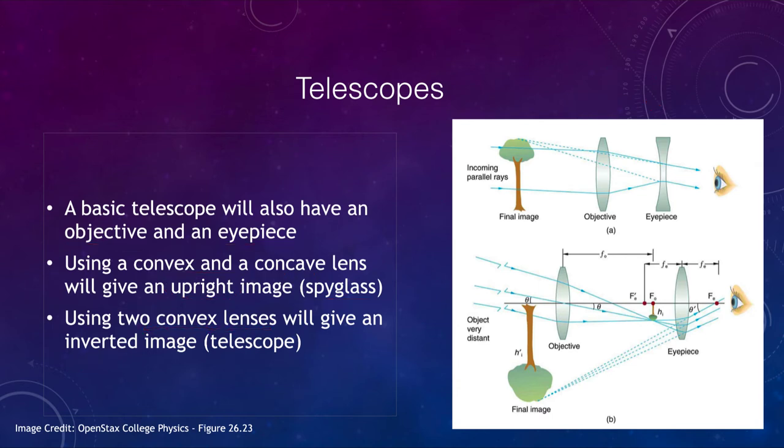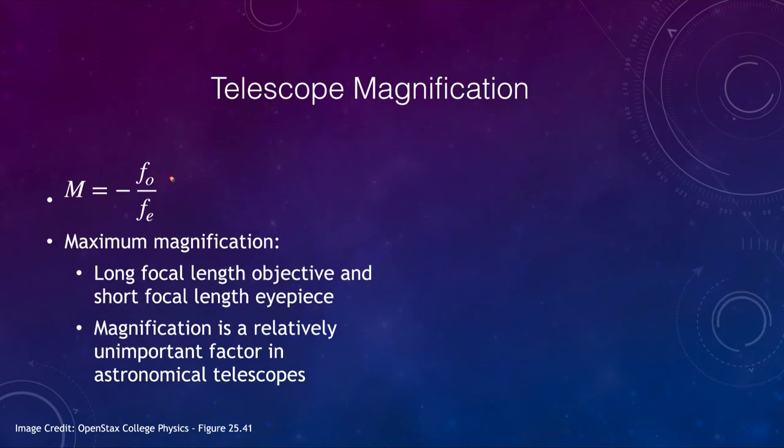We can also look at magnification for a telescope. The magnification of a telescope is given by the focal length of the objective divided by the focal length of the eyepiece. For maximum magnification you want a long focal length objective and a short focal length eyepiece. However, we find that magnification is a relatively unimportant factor in astronomical telescopes. Astronomers want to see as much detail, so they want bigger telescopes. Magnification does not bring out any more detail; it just magnifies a somewhat blurry image.